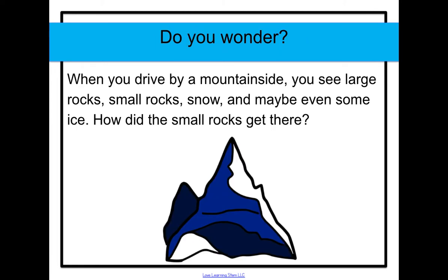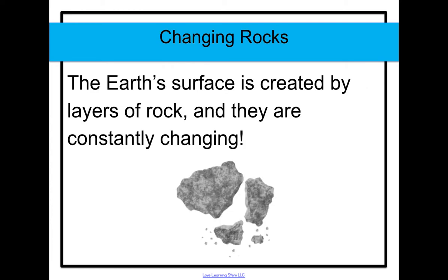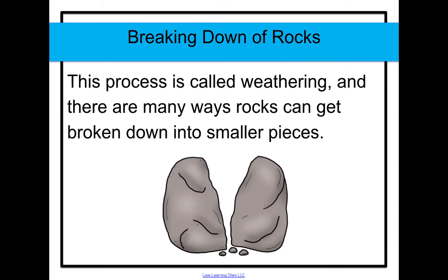Do you wonder, when you drive by a mountainside and you see large rocks, small rocks, snow, and maybe even some ice, how did the small rocks get there? The Earth's surface is created by layers of rock and they are constantly changing. This process is called weathering and there are many ways rocks can get broken down into smaller pieces.